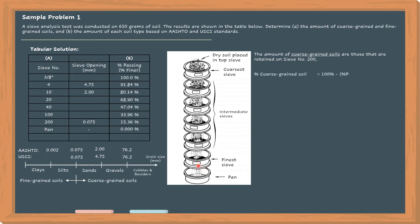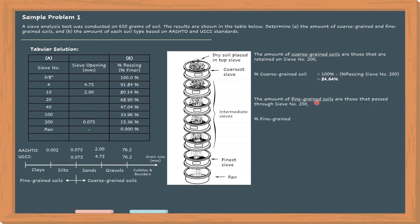In mechanical sieving, the coarsest sieve is at the top and the finest is at the bottom — the finest being sieve number 200. All particles retained on number 200 and above are coarse-grained soil. All that pass through sieve number 200 are fine-grained soils. So, percent of coarse-grained soil equals 100% minus percent passing sieve number 200: 100% minus 15.36% equals 84.64%. The amount of fine-grained soil equals 15.36%. Summing them: 84.64% plus 15.36% equals 100%.